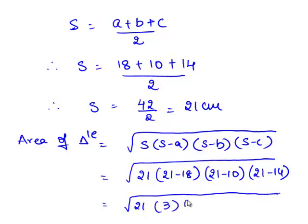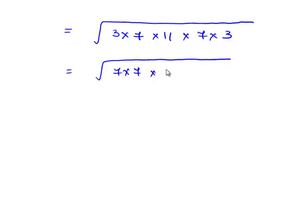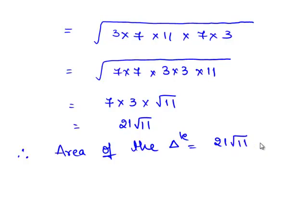Substituting, we get the square root of 21 times 3 times 11 times 7. We can write 21 as 3 times 7, giving us the square root of 7 times 7 times 3 times 3 times 11. Since 7 times 7 is 7 squared and 3 times 3 is 3 squared, we bring out 7 times 3 from the square root, leaving square root of 11. Therefore, the area of the triangle is equal to 21 times square root of 11 centimetres squared.